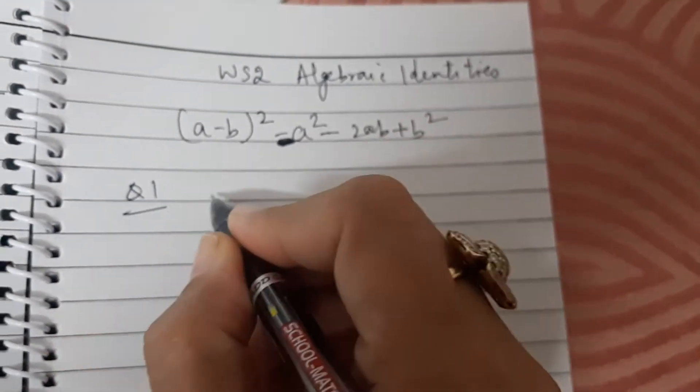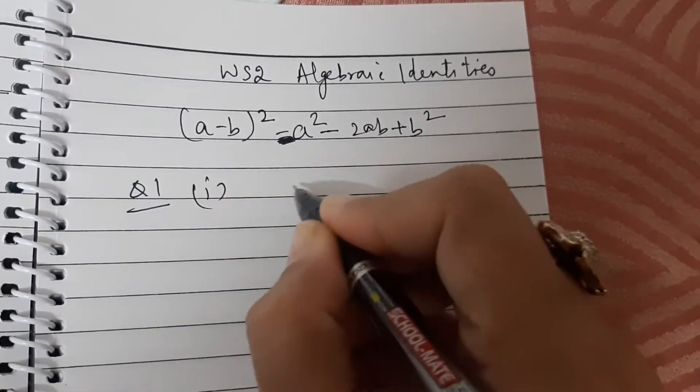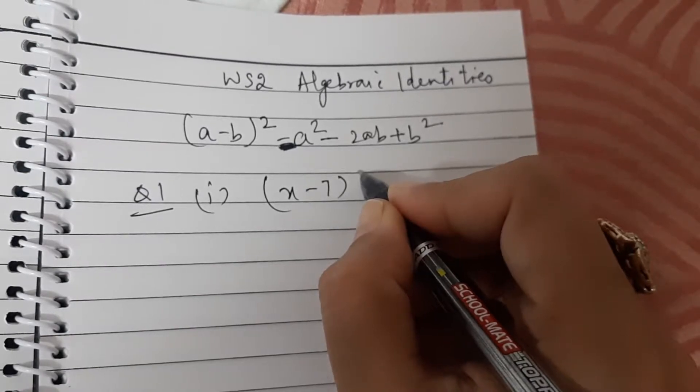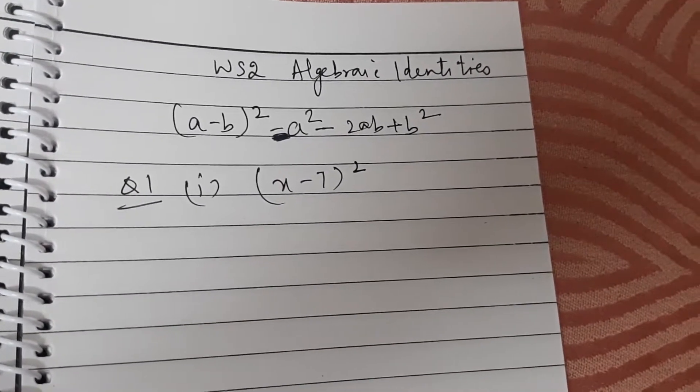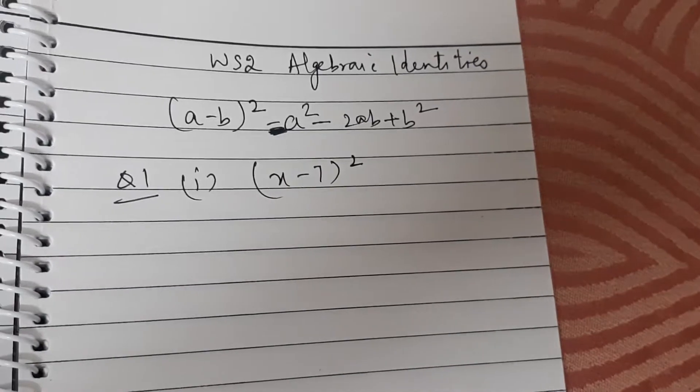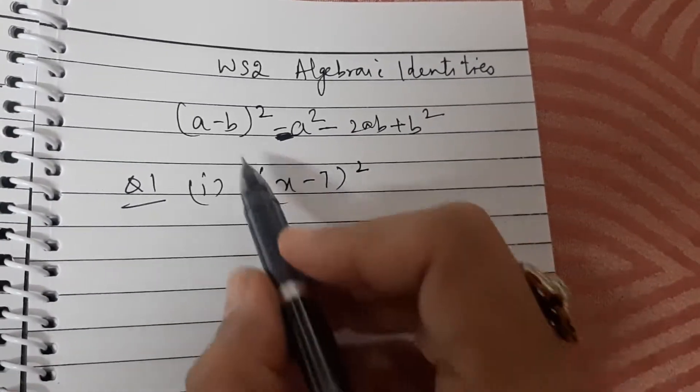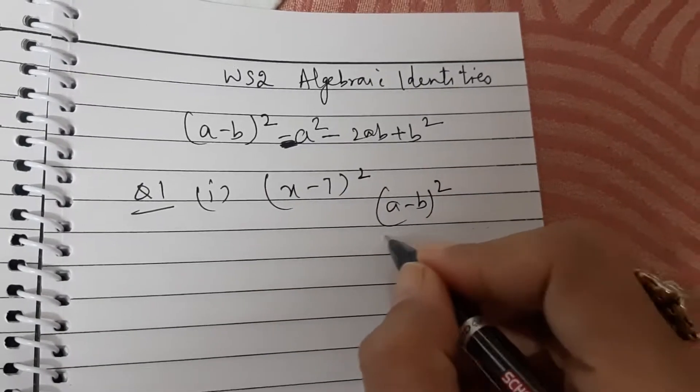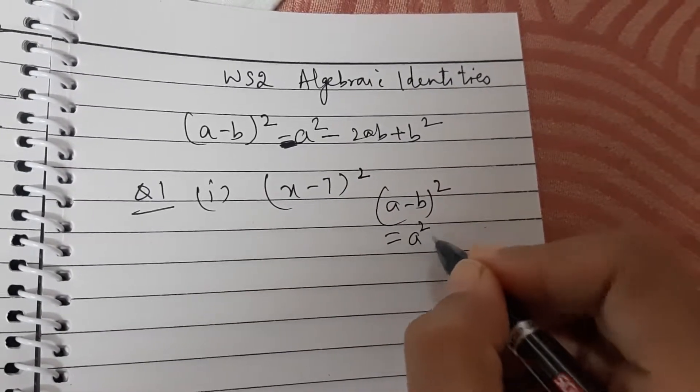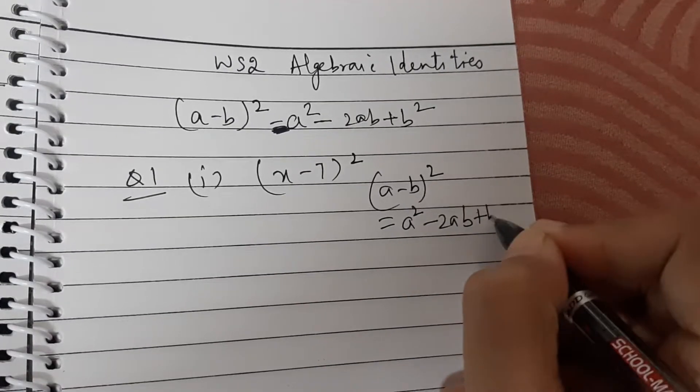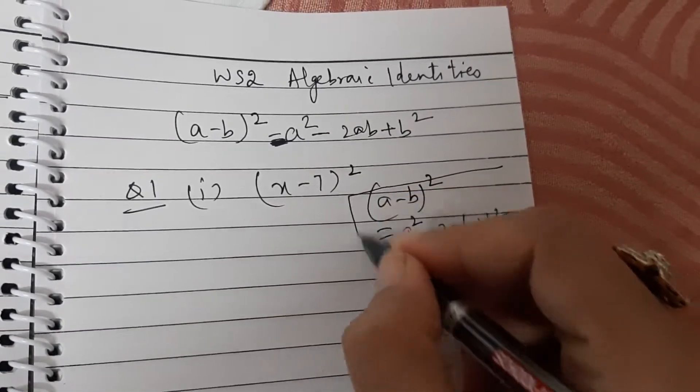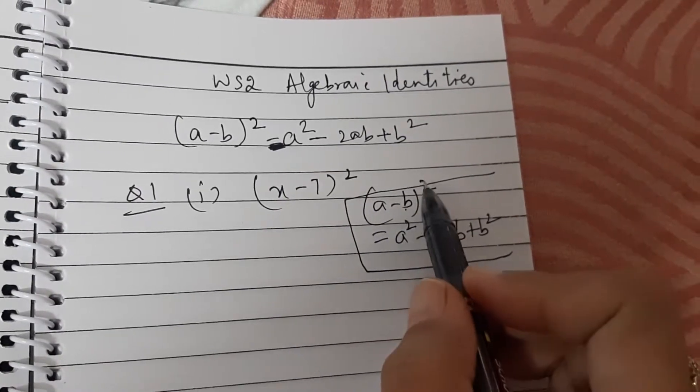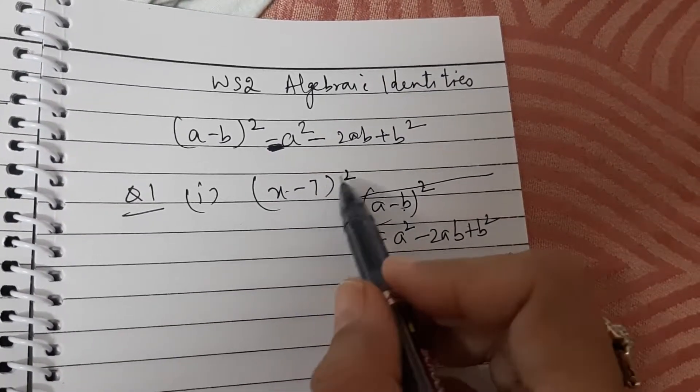Question number 1. First part is we have to find x minus 7 whole square using the algebraic identity. You know that a minus b whole square is a square minus 2ab plus b square. Now compare a minus b whole square with x minus 7 whole square.